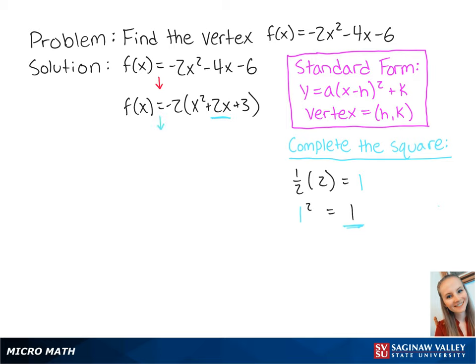Now we can manipulate the equation to give us f(x) = -2(x² + 2x + 1 + 2).